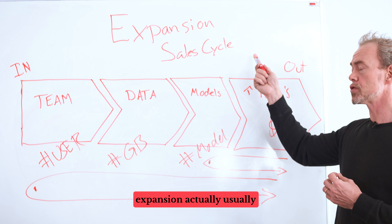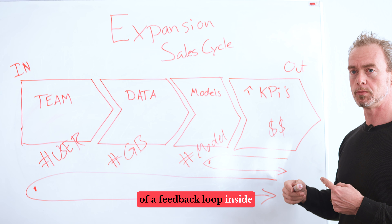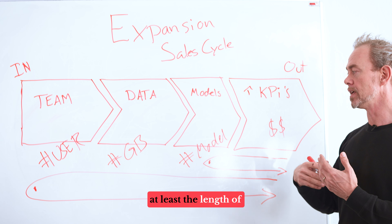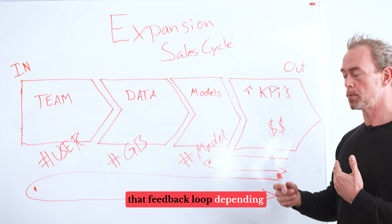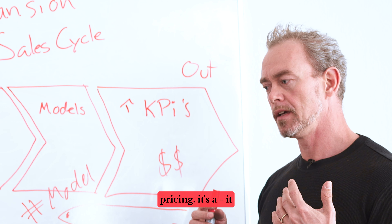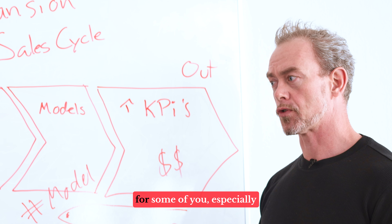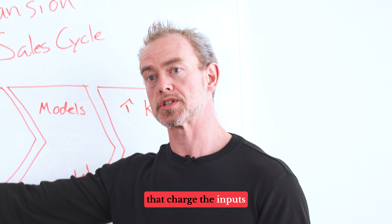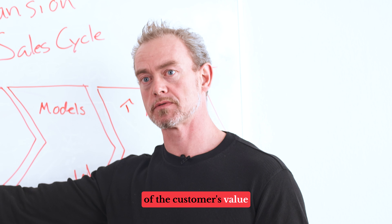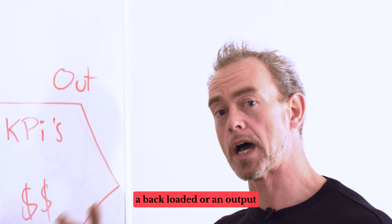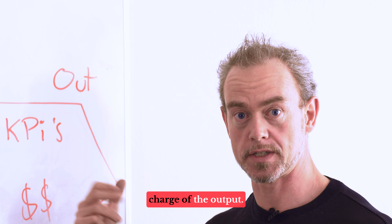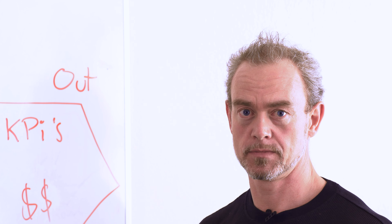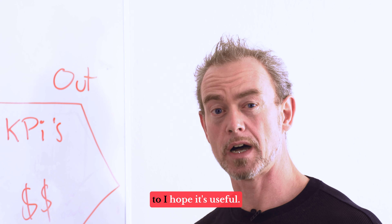The idea is that expansion actually usually runs some sort of feedback loop inside the customer's business, and you decide — at least partially — the length of that feedback loop depending on how you structure your pricing. This could be an aha moment if you have front-loaded pricing models, as I call them — ones that charge the inputs of the customer's value chain — as opposed to a back-loaded or output-based pricing model that charges the output. Changing to output-based pricing can significantly speed up the expansion sales cycle. I hope it makes sense and I hope it's useful.